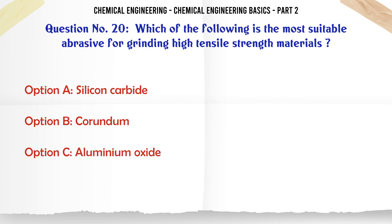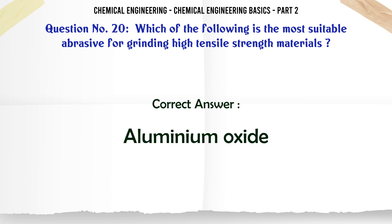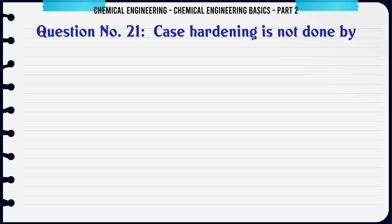Which of the following is the most suitable abrasive for grinding high tensile strength materials? a) silicon carbide, b) corundum, c) aluminium oxide, d) boron carbide. The correct answer is: aluminium oxide.